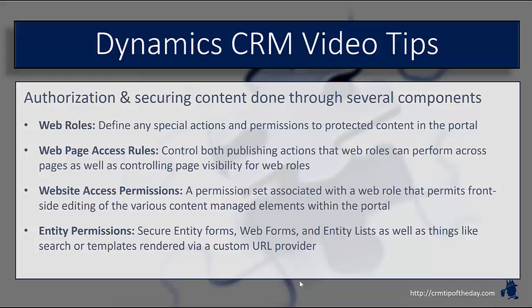Once you've defined how users are going to authenticate, it's really a matter of authorizing them to access specific areas of the portal. That's done through a few different scenarios. The first option is what are called web rules — these basically define what actions and permissions users have to specific protected content within the portal. You also have web access rules, which allow you to control publishing actions and what specific pages are visible to people with a specific web role. If you define one for authenticated users and want them to access specific areas, you can do that using access rules.